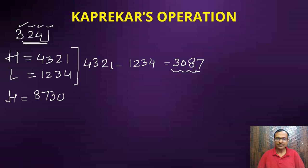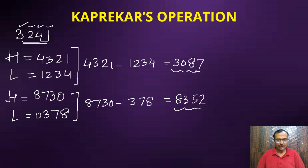The highest number formed by 3087 is 8730 and the lowest is 0378. So if you subtract these two, 8730 minus 378 is going to give you 8352. Again perform this operation.